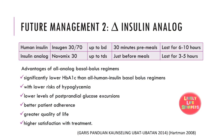Another clinical question worth considering is: which is better — human insulin or insulin analog? An example of human insulin is Insigen 30/70, which is usually dosed up to twice daily. Patients have to use it 30 minutes pre-meals and the duration of action lasts around 6 to 10 hours. Compared to insulin analogs like Novomix 30, which can be given up to 3 times a day, just before meals, and has a shorter duration of action of only 3 to 5 hours, the latter allows more flexibility in dose adjustment corresponding to the patient's meals intake. Other advantages of analog basal-bolus regimens include significantly lower HbA1c than human insulin basal-bolus regimens, with lower risks of hypoglycemia, lower levels of postprandial glucose excursions, better patient adherence, greater quality of life, and higher satisfaction with treatment.